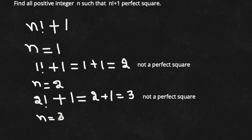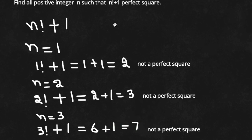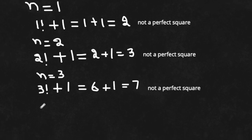Next, take n is equal to 3. We have 3 factorial plus 1. 3 factorial is 6, so 6 plus 1 is 7. And 7 is again not a perfect square.